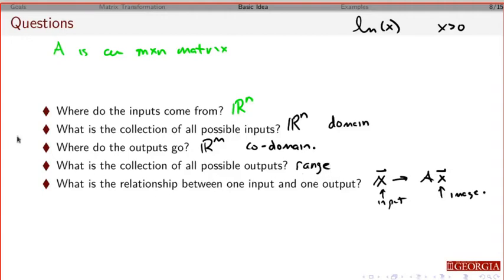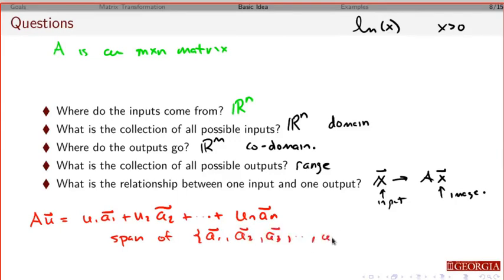In terms of the range, again, we're going to explore this again. But if I take A times U, this is going to give me a linear combination of the columns of A. And since now this is going to be any possible U I can plug in here is going to be okay, this is going to basically be the span of the columns of A. So in terms of what is the range of this thing, the range is going to be the span of the columns of A. And we'll see more of that later.